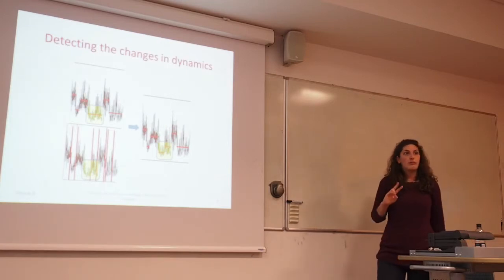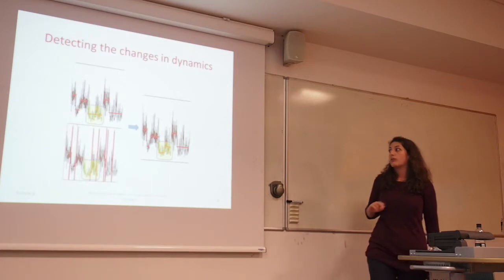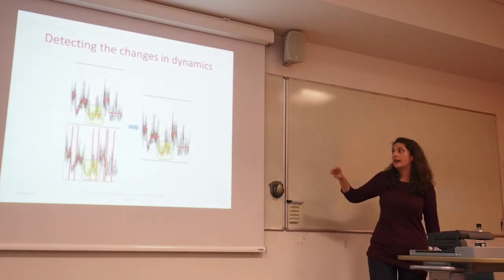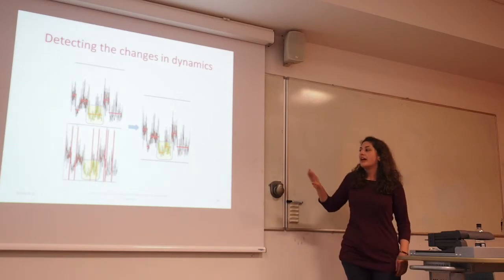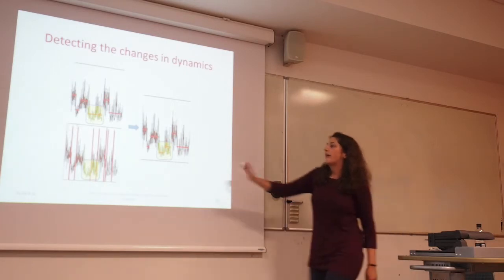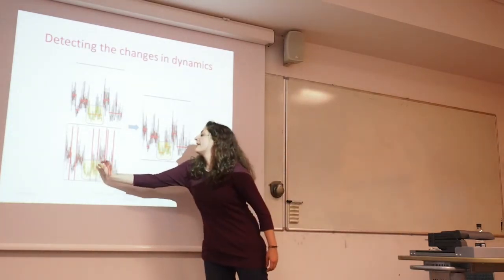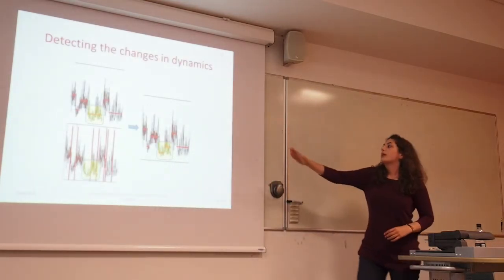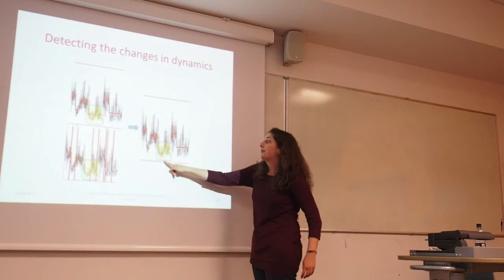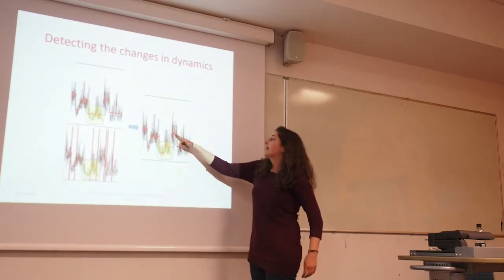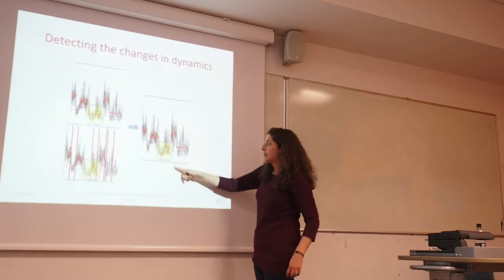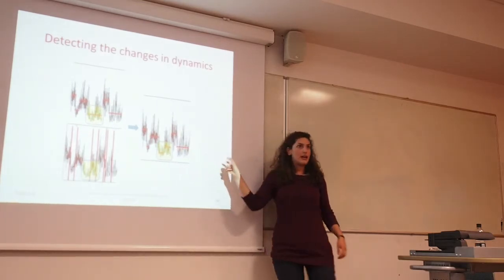We use two kinds of parameters: the mean-variance function, where we consider changes in both mean and variance. The variance captures the details and intensity of the data so we can detect an additional change point. Here we can see an area with one change point, and here there is another change point where the character of the data changes.